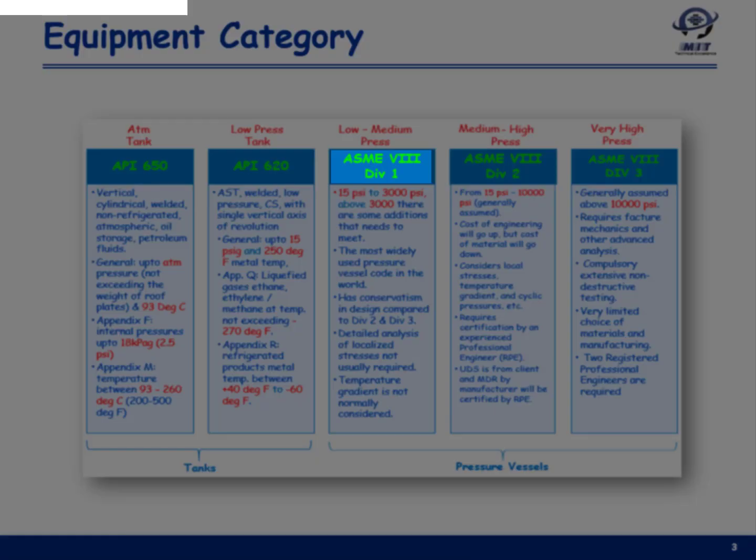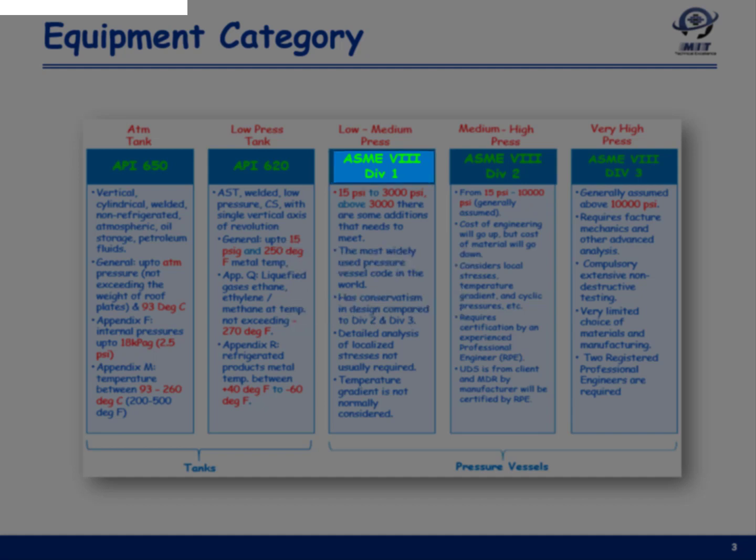Then comes ASME Section 8 Division 1, which we can classify as a low to medium pressure vessel code. It ranges from 15 psi gauge to 3000 psi gauge.